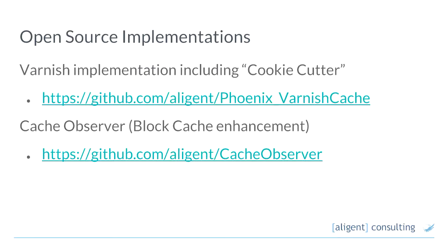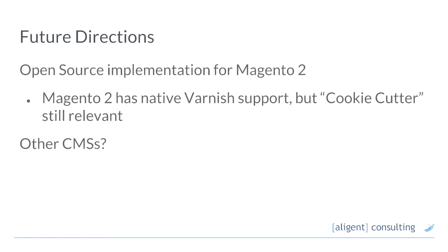Everything I've talked about today is available for Magento 1 and is open source — it's been up on GitHub for quite a while. The Varnish implementation of Cookie Cutter is part of a modification we've made to the Phoenix Varnish cache module. Cache Observer, the block cache enhancement, is also on GitHub. If you're doing Magento work, feel free to check those out. They are both for Magento 1.